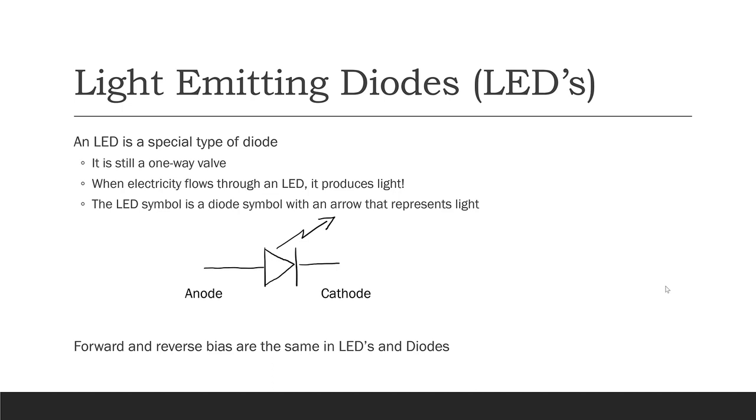Just like a regular diode, an LED has an anode and a cathode, and just like a regular diode, LEDs can be forward biased and electricity can flow through them, or they can be reverse biased and no electricity flows. When they're forward biased and the electricity is flowing, the LED lights up. When it's reverse biased and there's no electricity flowing, then the LED does not light up.